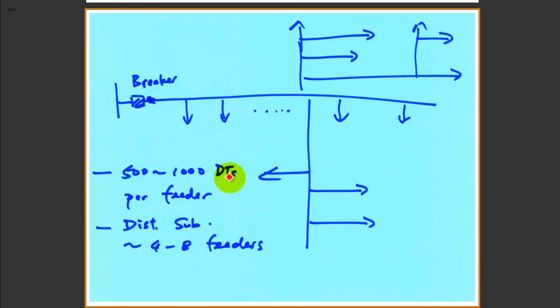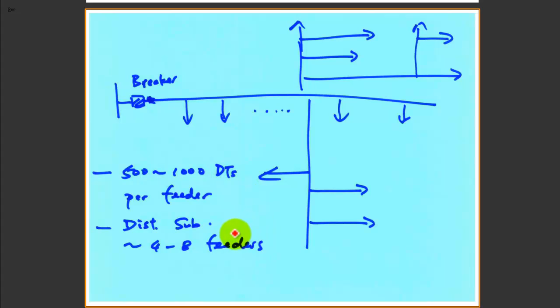This diagram shows a breaker with meters spread throughout the entire distribution geographical region. Each feeder will have approximately 500 to 1,000 distribution transformers. At Michigan Tech we don't have that many because we have buildings. For a residential area there might be large numbers of transformers per feeder, and sometimes each distribution transformer can handle up to 8 feeders. Depending on the size of the power transformer at the substation, sometimes you'll have about 4 feeders at most.